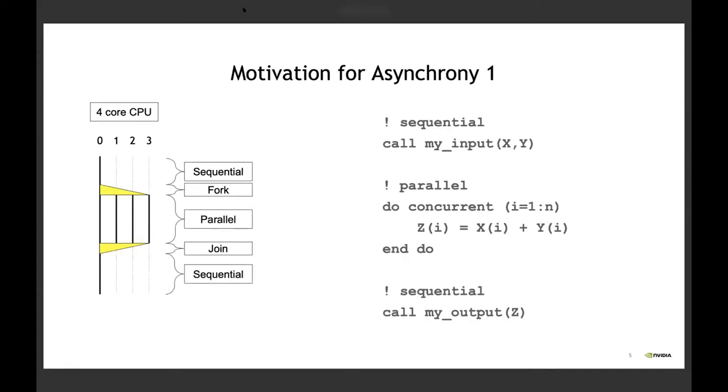So a very simple example of this. This is pretty clearly motivated by GPUs, but it's important enough on its own, but it's not the only reason. So imagine you have a code like this. You have some sequential thing, maybe reading data. You do parallel computation, and then you have a sequential output. This is a sequential thing. You have to do these things in order. And if you're doing them on a CPU and do concurrent saturates your whole CPU, that's fine. No big deal. We don't need anything extra here. This runs fine.